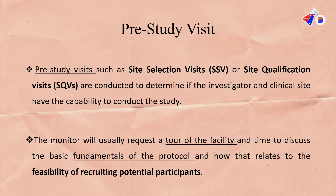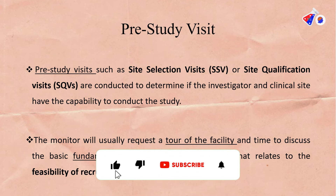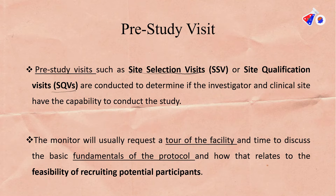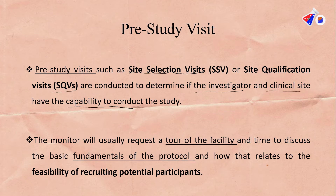A pre-study visit is also called a Site Selection Visit (SSV) or Site Qualification Visit (SQV). From the name itself you can understand that these visits are conducted to select or qualify a particular site for your clinical trial. This visit is helpful in determining the capability of the investigator and the ability of the clinical trial site to conduct the study.